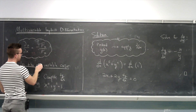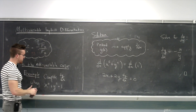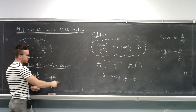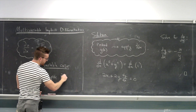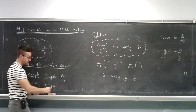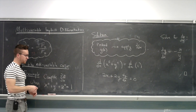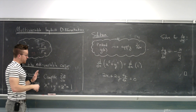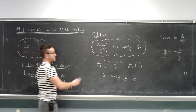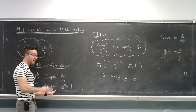In the multivariable setting, the only thing that changes is you have extra variables. Instead of computing something like dy/dx given an implicitly defined curve, what we'll be asked to find is something like the partial of z with respect to x given an implicitly defined surface. In other words, given an equation like x squared plus y squared plus z squared equals 1. This is now a multivariable calculus implicit differentiation problem. What changes? Nothing. We're just going to pretend that z is a function of x and y.